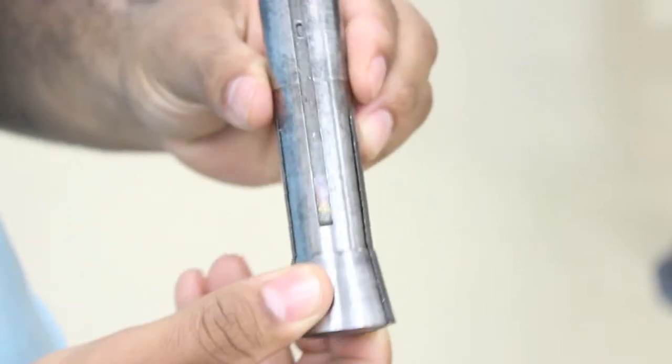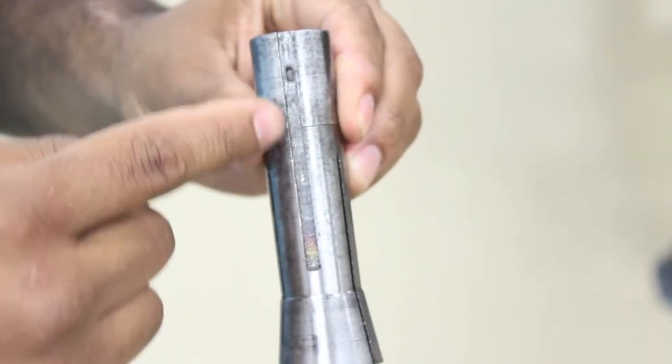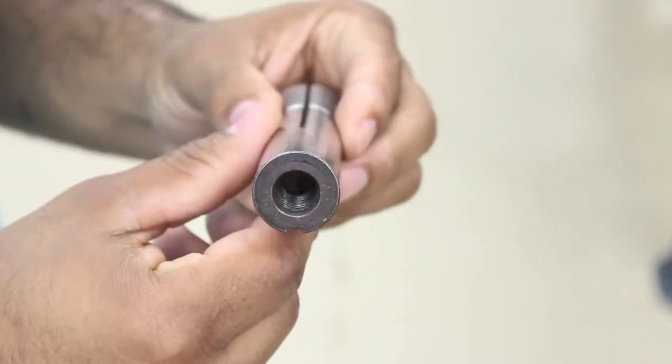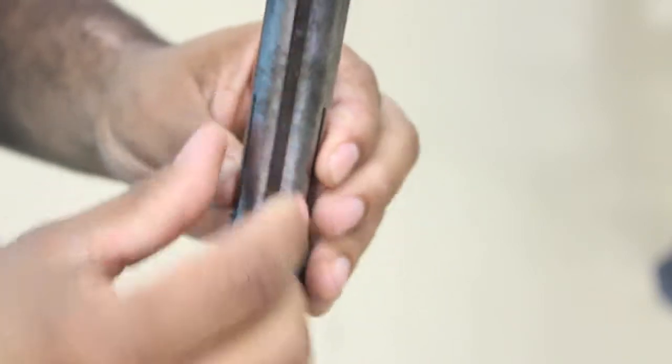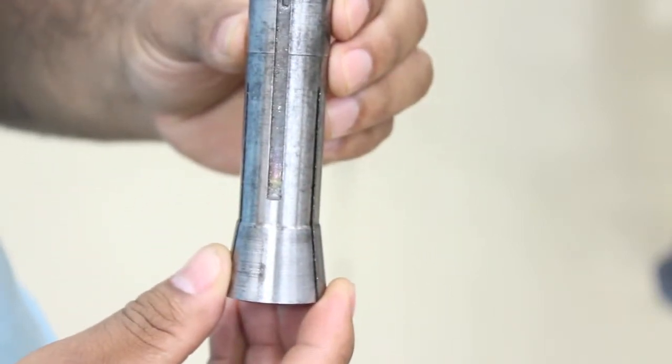Notice the keyway and also the threaded end. The keyway is here to line up the collet inside of the mill spindle and the key of the mill drives the collet.